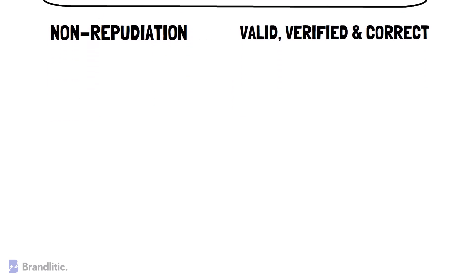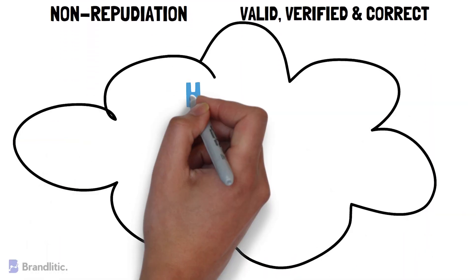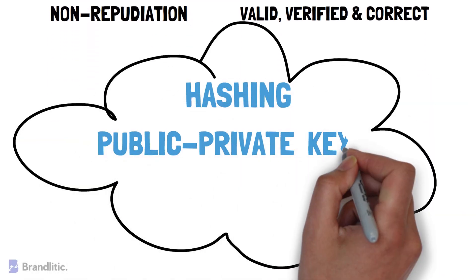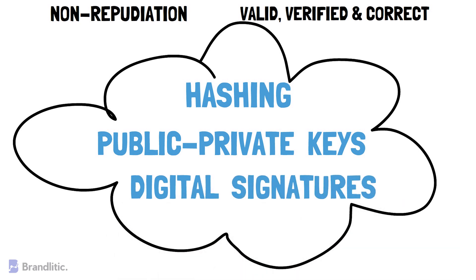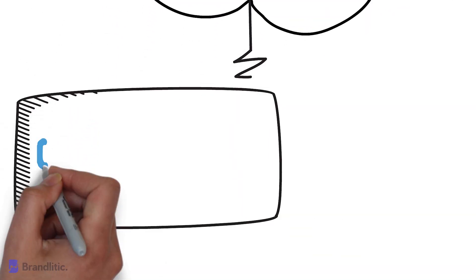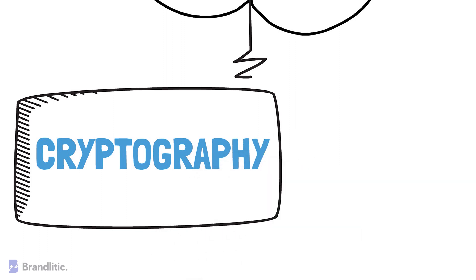From a broad perspective, hashing, public-private key pairs, and digital signatures together constitute the foundation of blockchain technology. These cryptographic features make it possible for blocks to get securely linked to other blocks, and also ensure the reliability and immutability of the data stored on the blockchain. There are a huge number of applications of blockchain technology, and it is cryptography which makes them all possible.